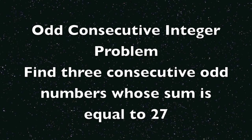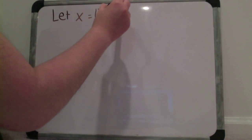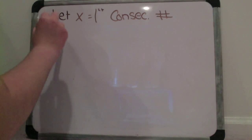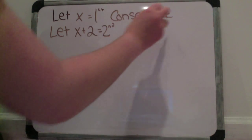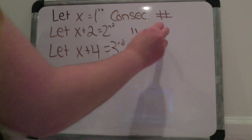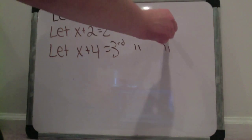For our next problem we want to find three consecutive odd numbers whose sum is equal to 27. First we have to write out our let x statements. Our first let x statement is let x equal first consecutive odd integer. Let x plus 2 equal second consecutive odd integer. Let x plus 4 equal third consecutive odd integer.